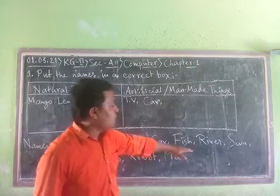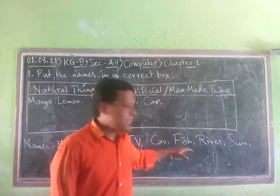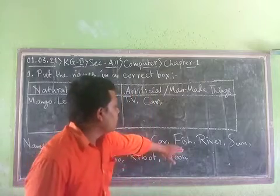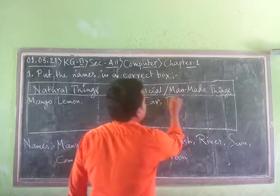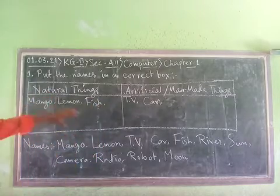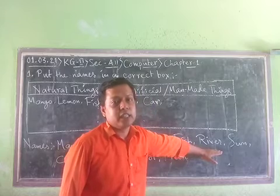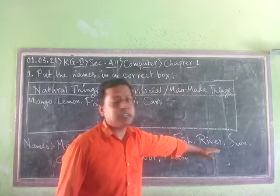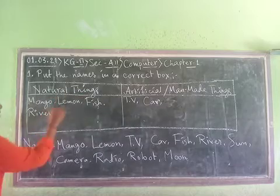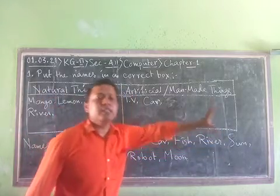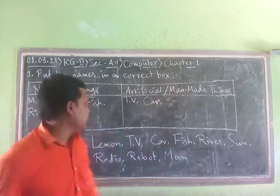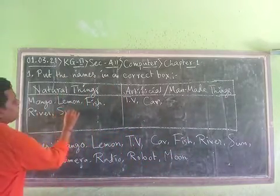Here comes fish. We know fish lives in water — we catch fish using a fishing rod or other catching materials. So fish is a natural thing and we write fish in the natural things box. Then comes river. River is also a natural thing — man did not make the river. So we write river in the natural things box. Then comes sun. Sun is also a natural thing; we get energy from the sun. So we write sun in the natural things box.